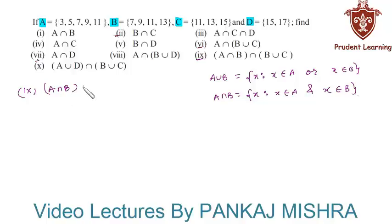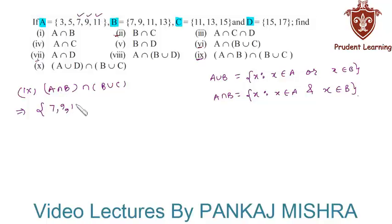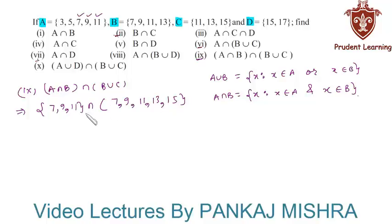In the ninth section we have (A intersection B) intersection (B union C). First, A intersection B is the set of elements common to both set A and set B, which gives us {7, 9, 11}. B union C means clubbing all elements of set B and set C, giving us {7, 9, 11, 13, 15}. The common elements between these two sets are 7, 9, and 11, so the result is {7, 9, 11}.